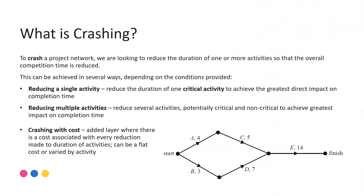Firstly a quick recap, what is crashing? When we're talking about crashing a project network we're talking about what reductions in the duration of activities can be made in order to have an impact on that overall completion time. Can we reduce one or more activities and achieve a saving in the time it takes to complete the entire project? In the previous video we looked at reducing just single activities and the importance of that being a critical activity.